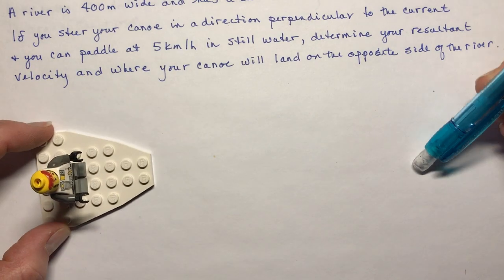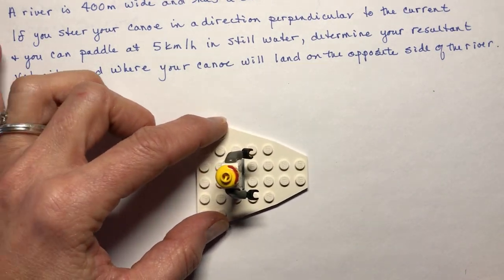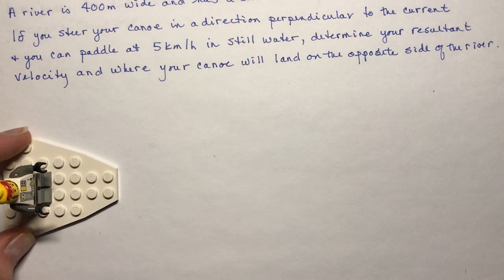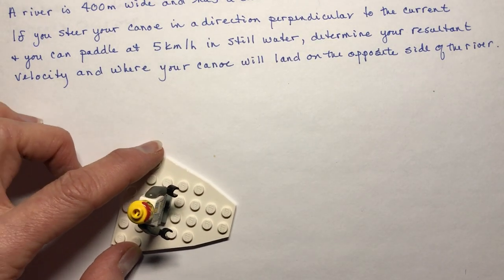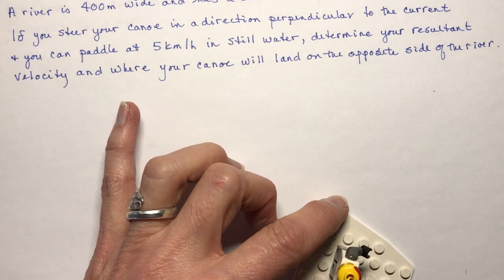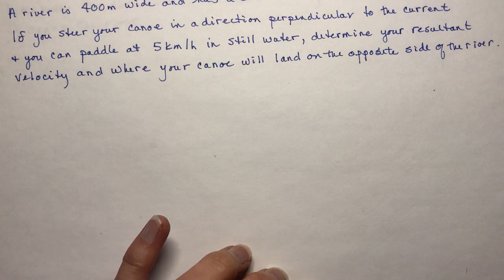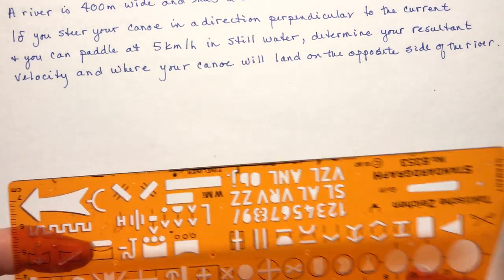So your resultant, if you want your resultant to be straight across, then you have a different type of calculation than if you don't care where the water current takes you, where are you going to land. Let's do some calculations with this to try to make it all very clear to you.